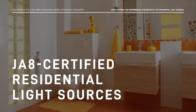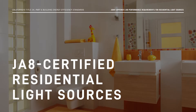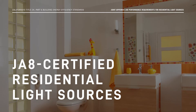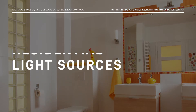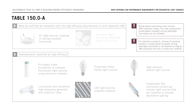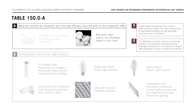Let's discuss the residential light sources that must be JA8 certified in order to be classified as High Efficacy and compliant with the Energy Code. These include light sources installed in ceiling-recessed downlight luminaires — remember, no screw-based lamps are allowed in recessed downlights — and any other light source which is not automatically classified as High Efficacy, such as indoor LED luminaires, screw-based LED lamps, and pin-based LED lamps.